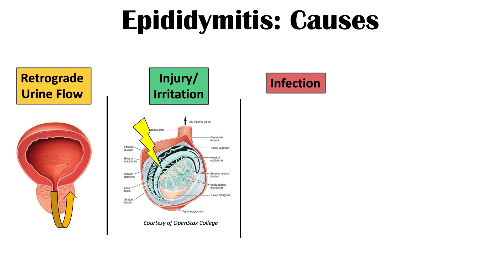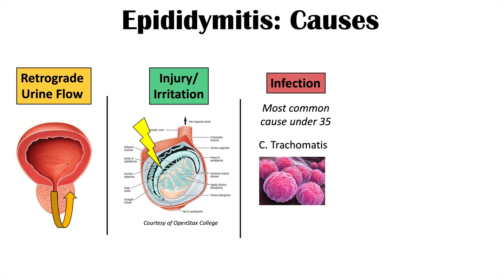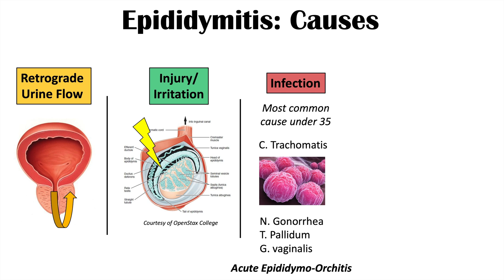Infections are another category, and actually the most common cause under the age of 35. Enteric bacteria like E. coli can lead to a urinary tract infection — rare in males but possible — and this can lead to epididymitis. Sexually transmitted diseases like Chlamydia trachomatis and Neisseria gonorrhea are more common in that age group, along with Treponema pallidum and Gardnerella vaginalis. These bacteria can lead to acute epididymo-orchitis, where the infection spreads from the epididymis into the testis as well.